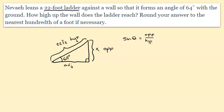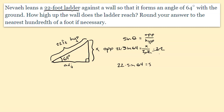Sine of theta is opposite over hypotenuse. We plug in what we know: the angle is 64, the opposite side is x, and the hypotenuse is 22. Solving for x, we multiply both sides by 22 to get x = 22 × sin(64). Plugging into the calculator gives x ≈ 19.77346902, which rounds to the nearest hundredth as 19.77 feet.